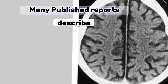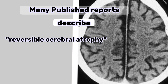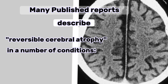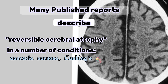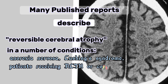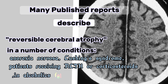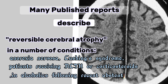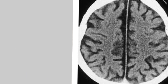Many published reports describe reversible cerebral atrophy in a number of conditions, including anorexia nervosa, Cushing's syndrome, patients receiving adrenocorticotropic hormone or corticosteroids, and in alcoholics following recent abstention.